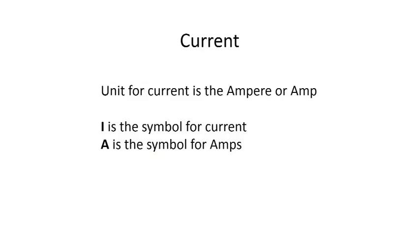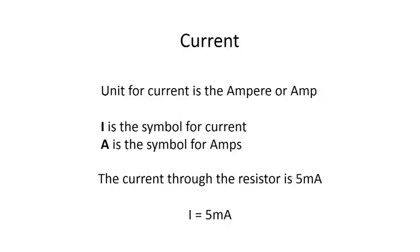Current is our next quantity. The unit for current is the ampere or amp. I is the symbol for current, and A is the symbol for amps. In a sentence you could say the current through the resistor is 5 milliamps, or I equals 5 mA. Usually when expressing voltage or current you would say the voltage across or the current through a component.